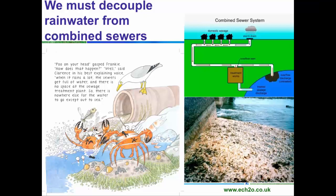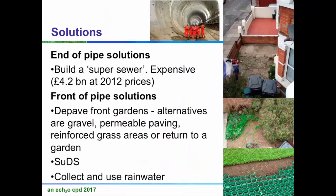Most seasides will have the same problem — some are still combined sewers and you'll be getting more sewage going out to sea. So we want to decouple rainwater from combined sewers. How can you do that? Do something with the rainwater that falls on or near your building. There are end-of-pipe solutions — the end-of-pipe solution in London is to build a super sewer — but there are loads of front-of-pipe solutions. At its simplest, you can just depave front gardens: alternatives include gravel, permeable paving, reinforced grass areas, or return to a garden.